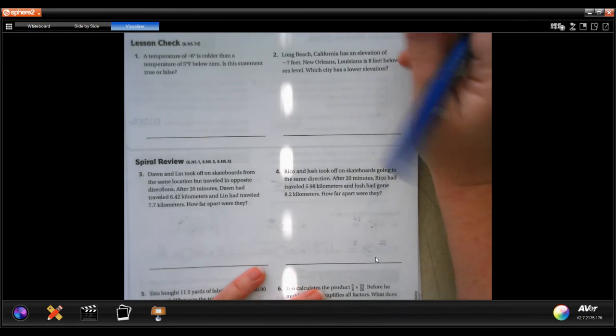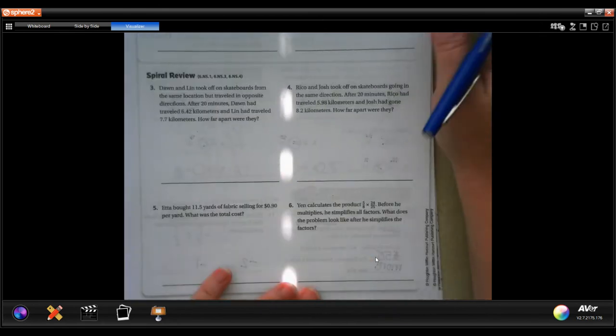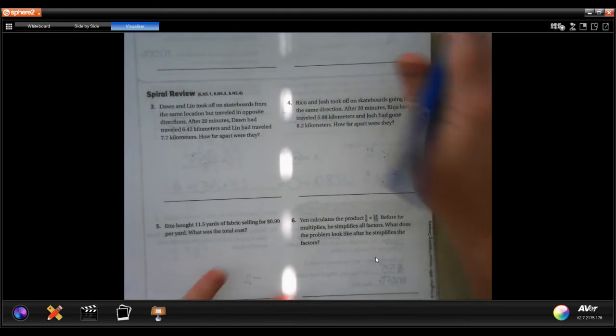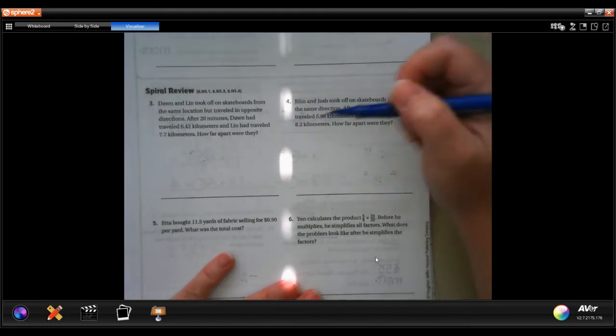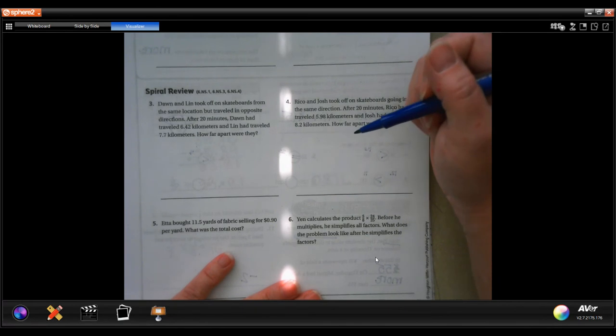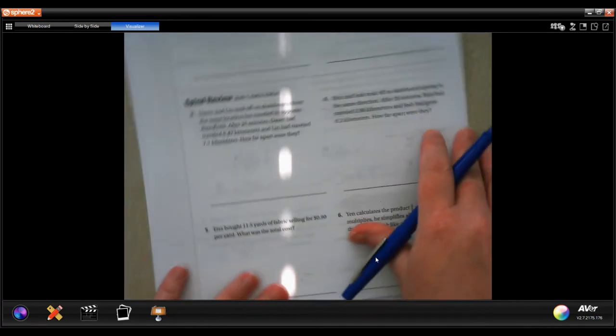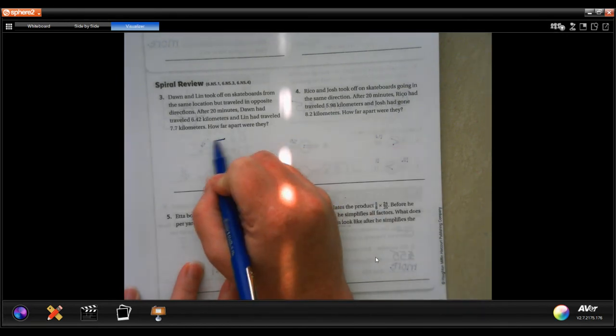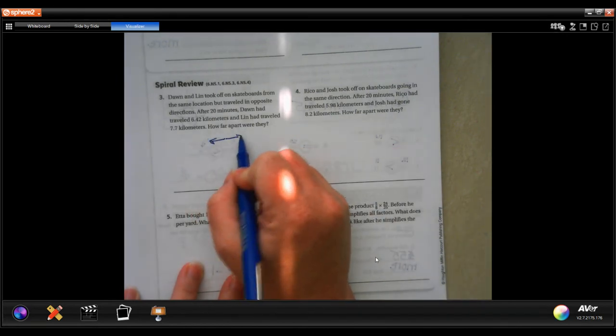Let's do spiral review. John and Lynn took off on skateboards from the same location but traveled in opposite directions. After 20 minutes, John had traveled 6.42 kilometers and Lynn had traveled 7.7 kilometers. How far apart were they? Well, here's the thing, they started right here. One went that way and one went that way.